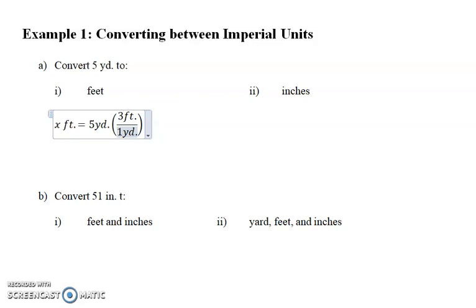So what you're trying to find, what you're trying to convert to, that goes in the numerator. What you're getting rid of, the unit that you're already given, that goes in the denominator because then the yards will divide out. The yard divided by yard, the units will divide out, and that leaves you with 15 feet. And you're finished. It's that simple. 3 times 5 is equal to 15, and there is your conversion factor.